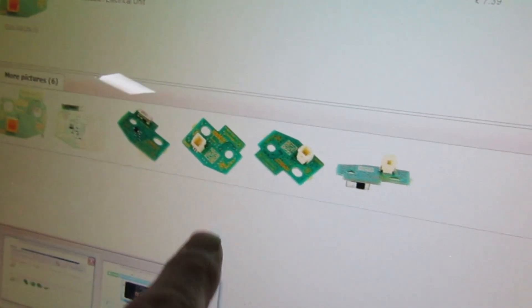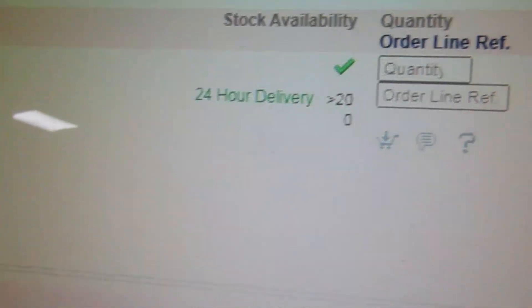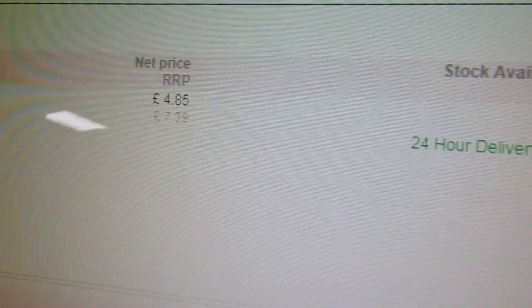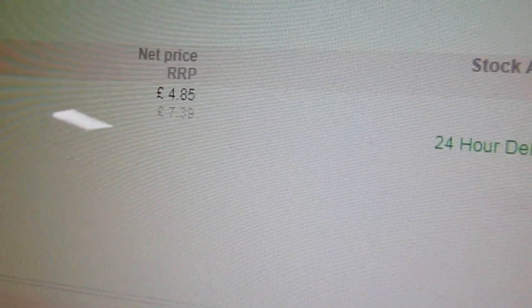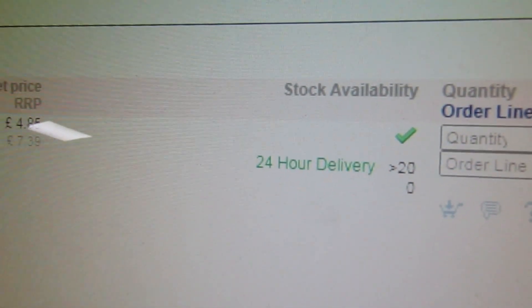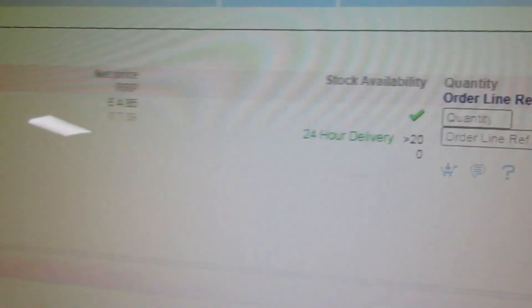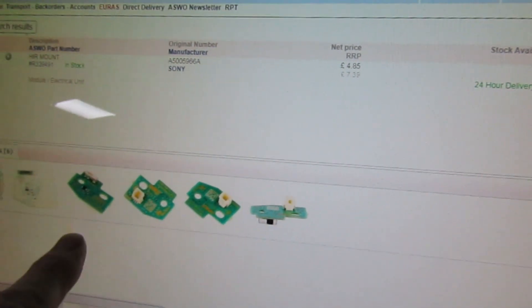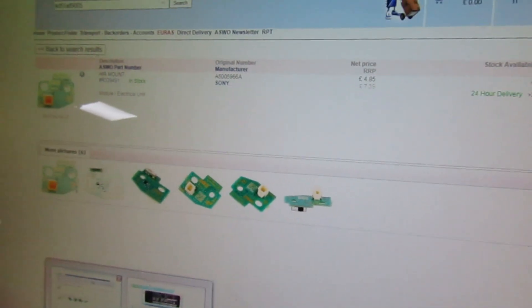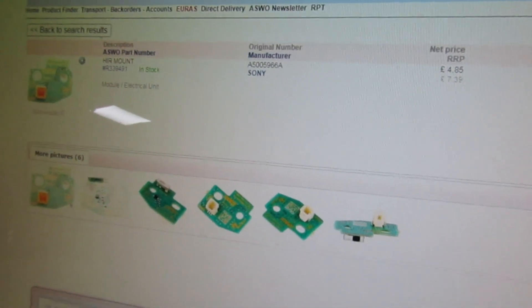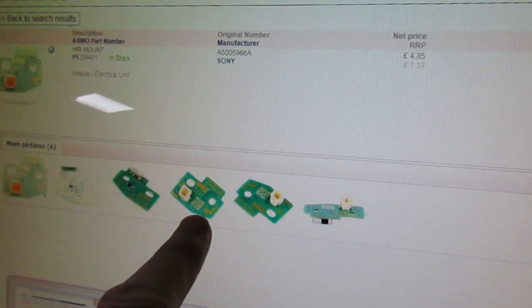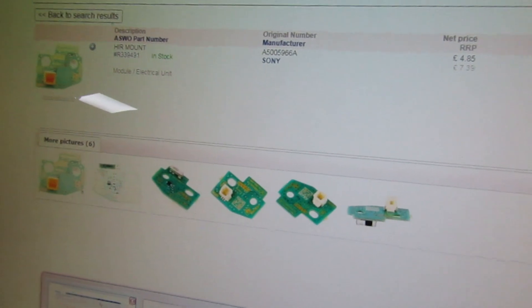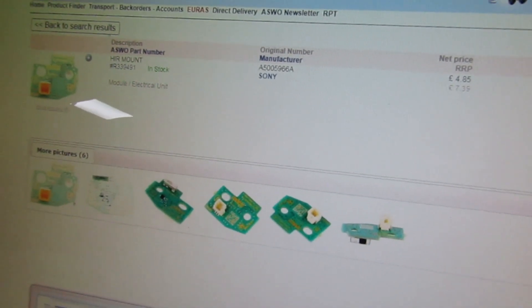At this point the sensible thing would be to just order a brand new board because they're only £4.85 and my supplier has more than 20 in stock. Usually when somebody's got a lot of something in stock it means it's a common fault. But before we rush in and buy this brand new board, let's take a quick look at the old one and see what the actual problem is.